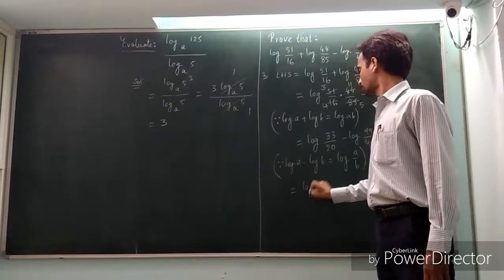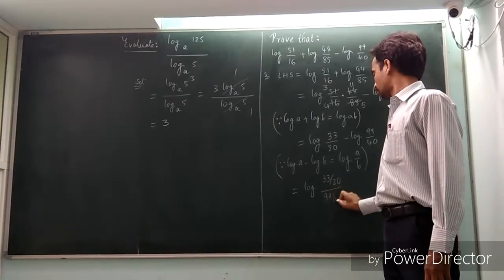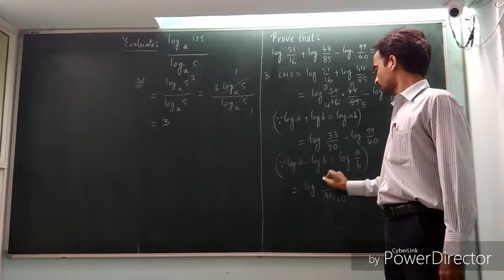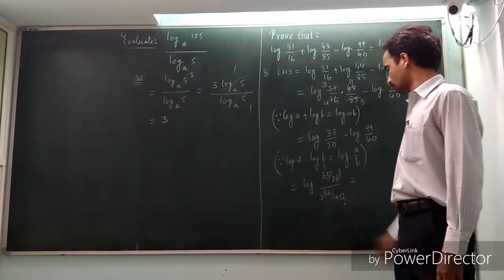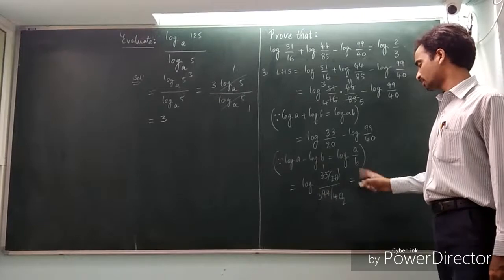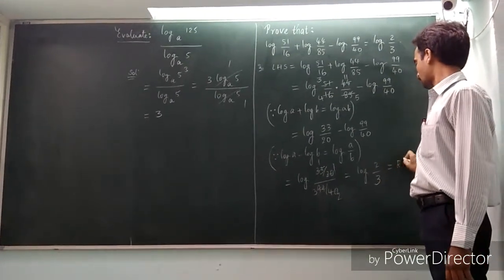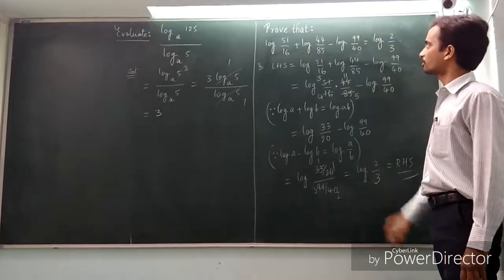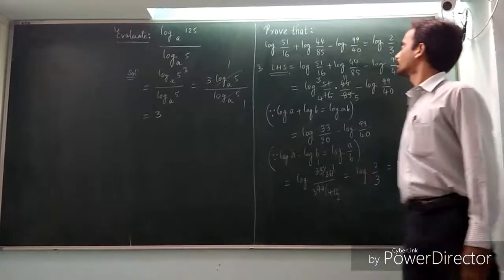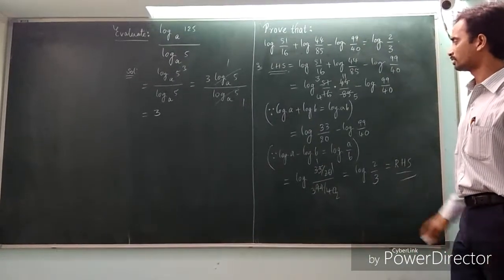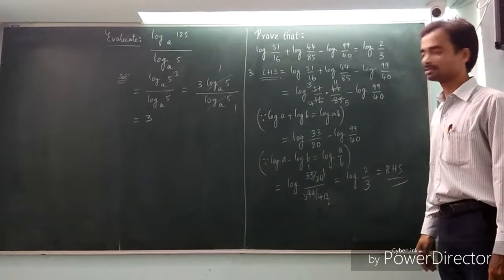This simplifies to log 33 by 20 divided by 99 by 40, which equals log (33/20 × 40/99). Cancelling common factors, we get log 2 by 3, which equals the RHS. In this way we can prove this statement by using the two identities: log a plus log b equals log ab, and log a minus log b equals log a by b.